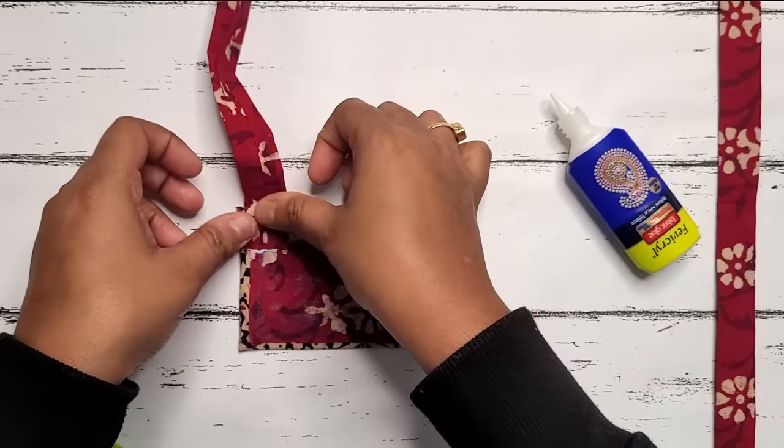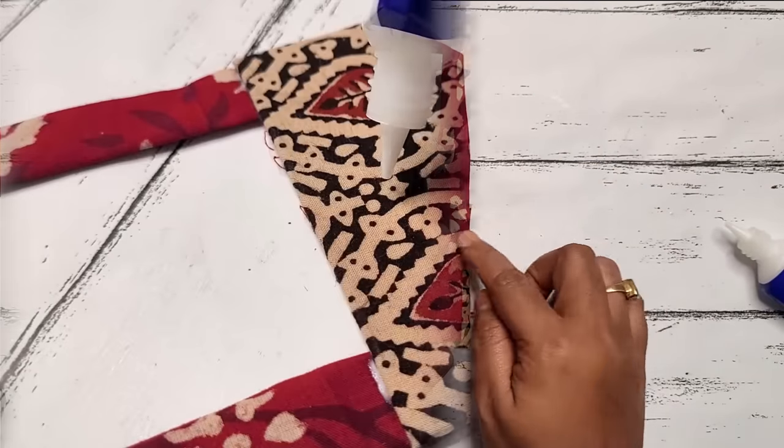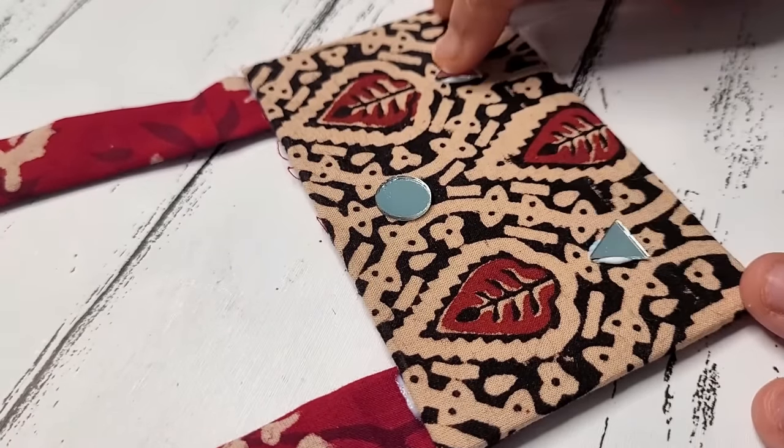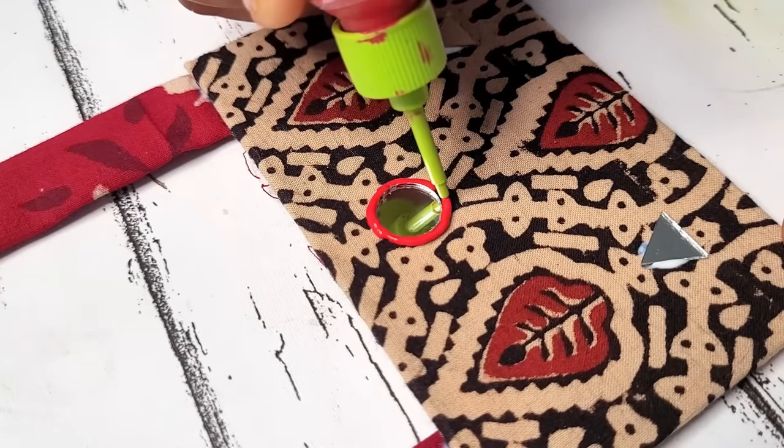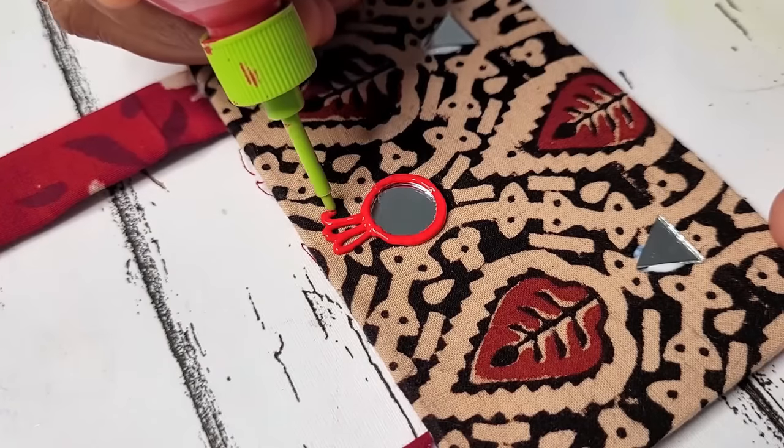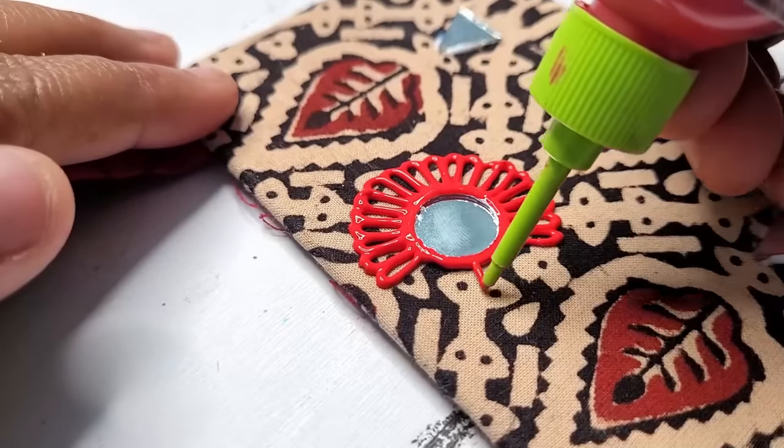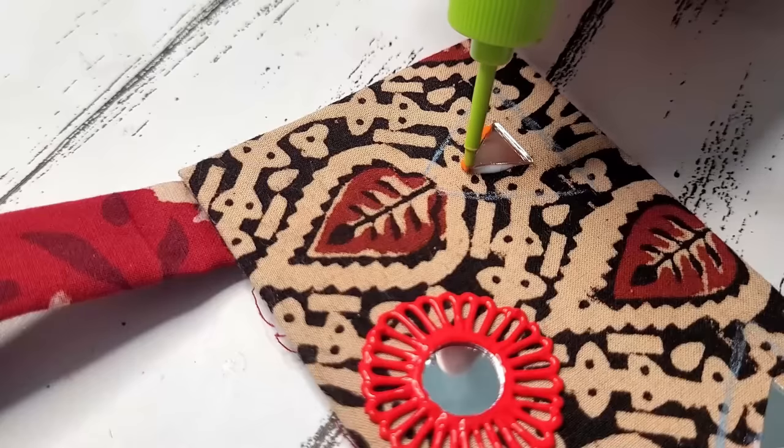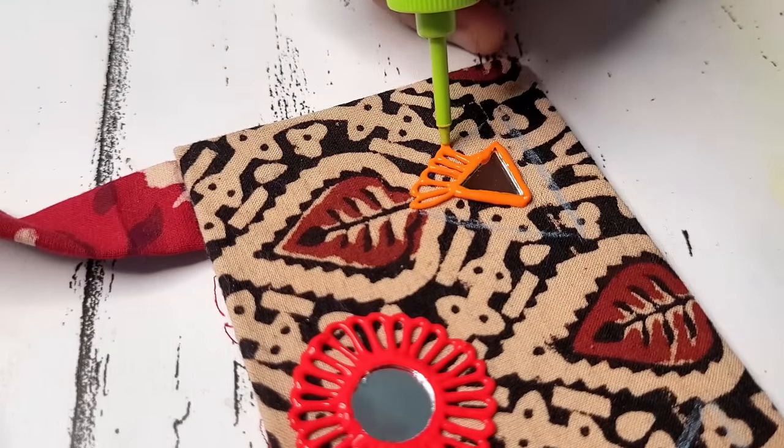Applying glue on two corners and sticking the fabric strip like this. Applying glue and sticking different shape mirrors. Here I'm using red color 3D outliner to outline these mirrors, and now drawing a pattern to enhance the look using orange color 3D outliner to cover the outer part of triangular shape mirror.